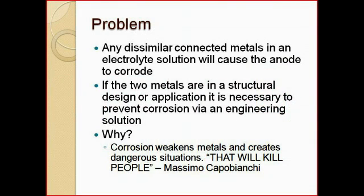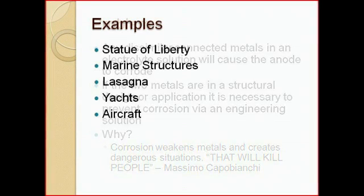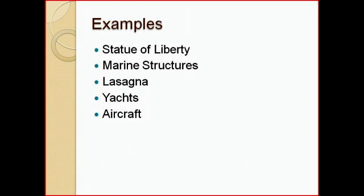The problem we encounter when engineering structures in a real-world context, when we have jobs, is if we connect two metals with dissimilar anodic potentials, they can corrode, which can actually cause weakening in the structure due to stress concentrations at the small pits on the surface. Some examples of galvanic corrosion include the Statue of Liberty, marine structures, lasagna, yachts, and aircraft.